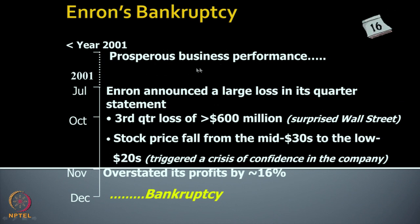Such a large company could totally collapse in such a short period of time because of failure of governance — corrupt people in charge were duping the company and each other. Now this is the process of their bankruptcy. It was a very much prosperous business as they were reporting. Till an earlier quarter it was profit-making, but the July quarter was the first time they reported a huge loss. In the third quarter — October end — there was a loss of more than 600 million dollars. Stock prices fell from 30 to 20 dollars, and in November it came to be known that they had been overstating profits for years. In just one month, in December, Enron became bankrupt.